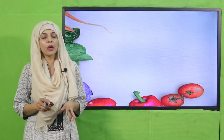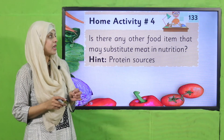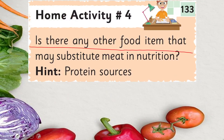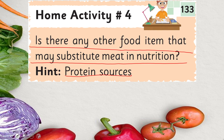Now it's time to note down the homework. At-home activity number four, given on page number 133: is there any other food item that may substitute meat in nutrition? Which food item can be an alternative to meat and provide protein? Because meat provides us with protein — and the answer is red beans and green beans, because they are very rich in protein and can be an alternative to meat.